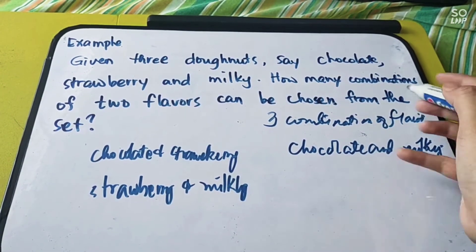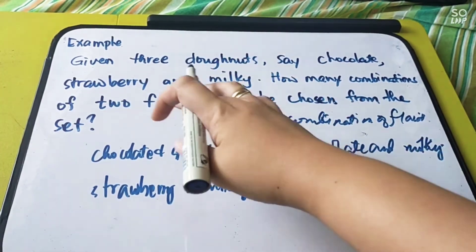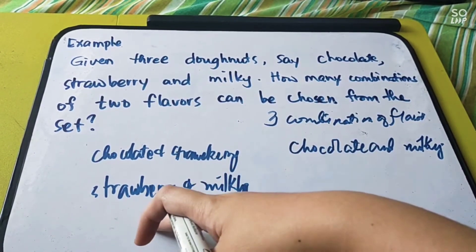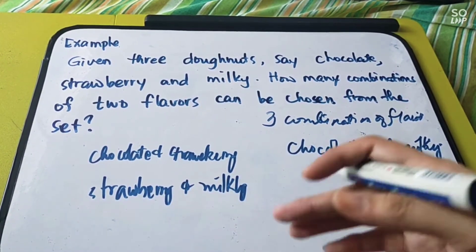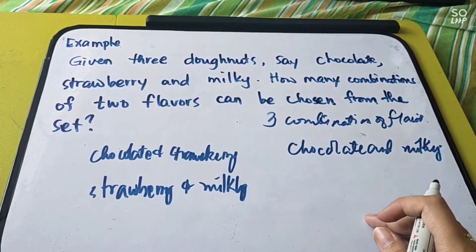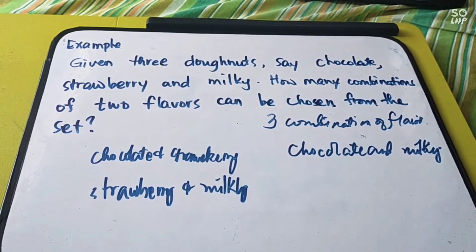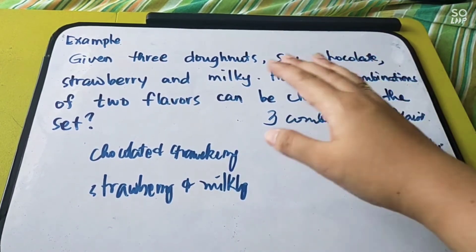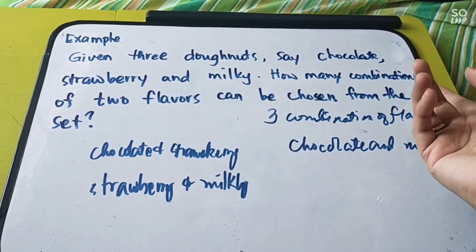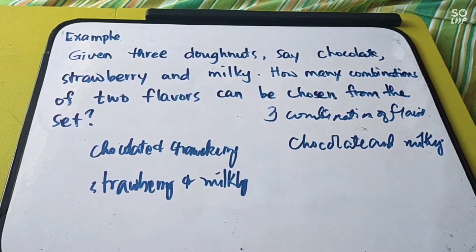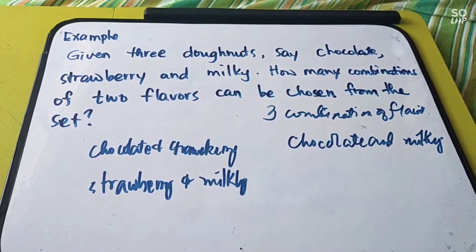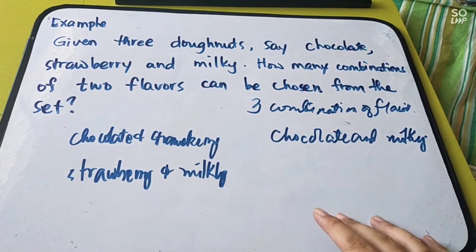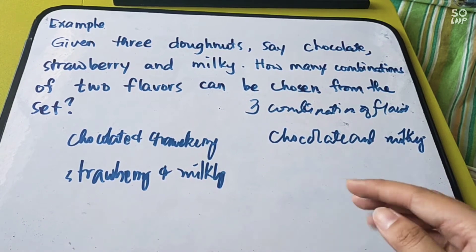Why only 3 combinations of flavors? Because if you choose strawberry and chocolate, that's no different from chocolate and strawberry. If you choose milky and strawberry, that's the same as strawberry and milky. So arrangement is not important in combination, unlike in permutation where the question would be 'in how many ways can you choose?' and you would use permutation.